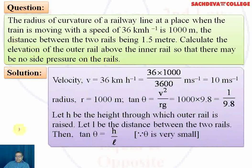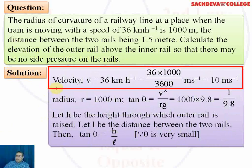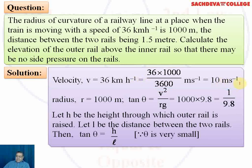To solve this question, 36 kilometers per hour is converted into meters per second by multiplying by 5 over 18, giving 10 meters per second. The radius is 1000 meters and the distance between the two rails is 1.5 meters.